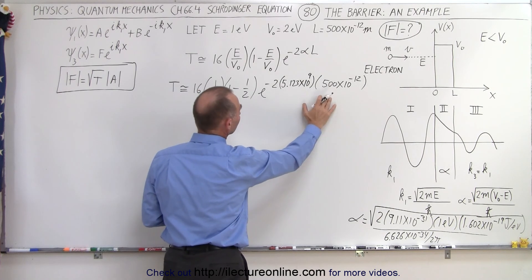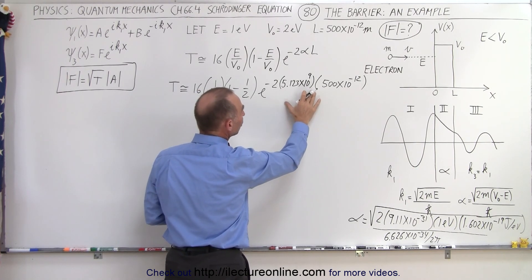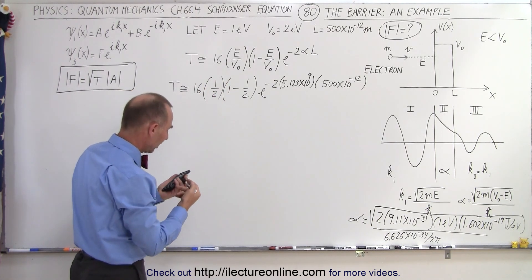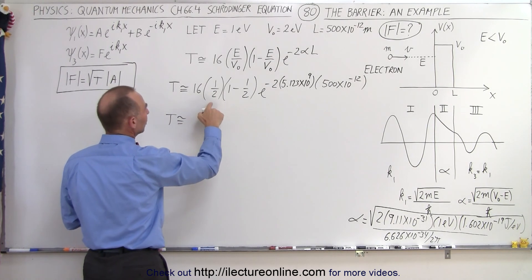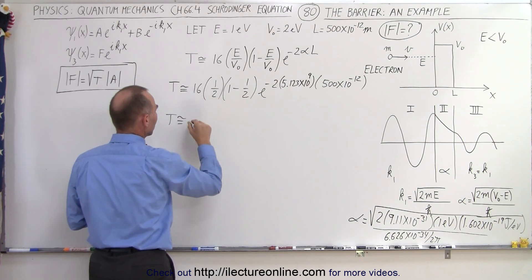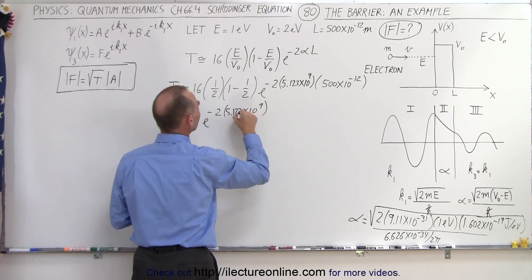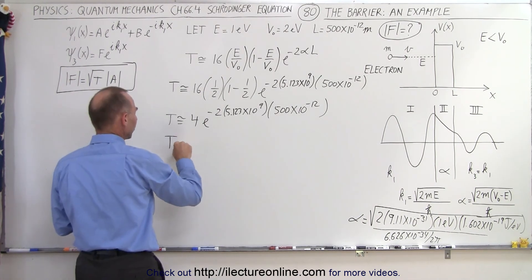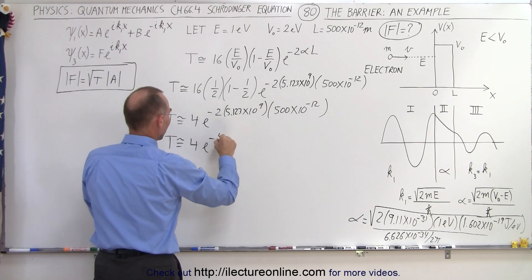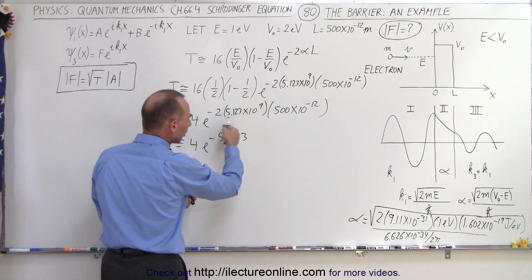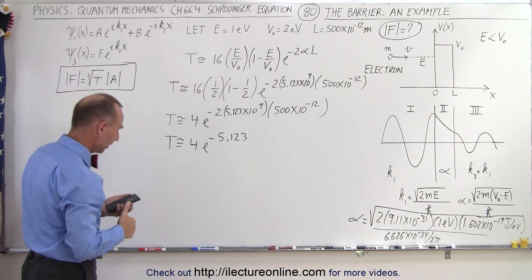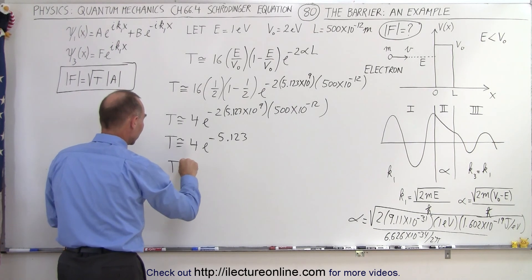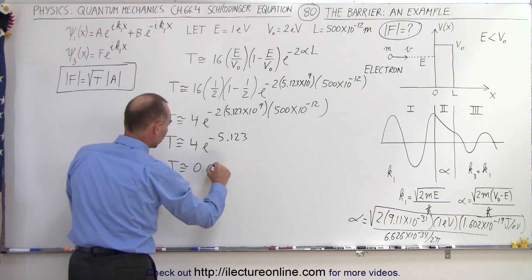When we multiply alpha times l — 5.123 times 10 to the ninth times 500 times 10 to the minus 12 — we get about 2.5 to 3, which is large enough to validate this approximate equation. So the transmission coefficient is approximately 1/2 times 1/2 — that's a quarter — times 16, which equals 4, times e to the minus 2 times 5.123. That gives us: T ≈ 4 times e to the minus 5.123, which is approximately 0.0238.